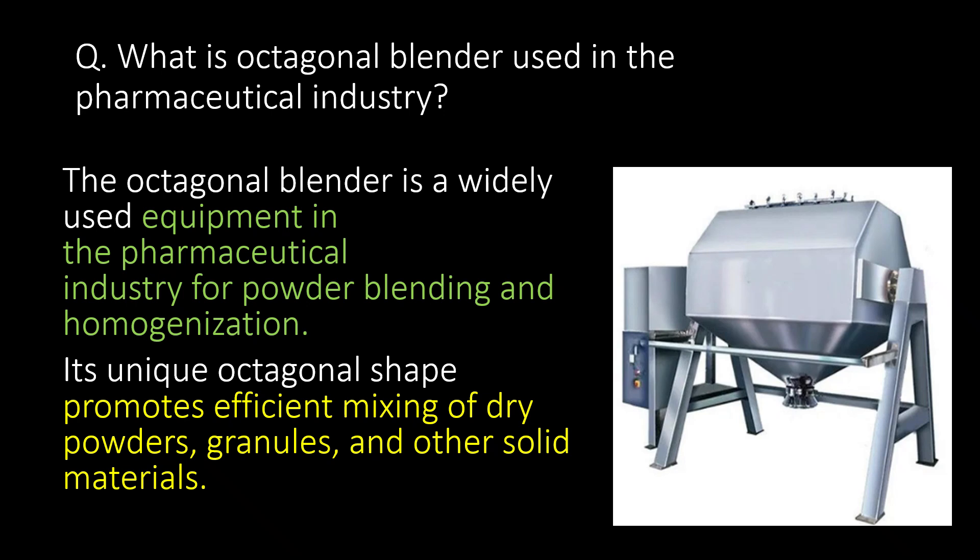The octagonal blender is a widely used equipment in the pharmaceutical industry for powder blending and homogenization. Its unique octagonal shape promotes efficient mixing of dry powders, granules, and other solid materials.